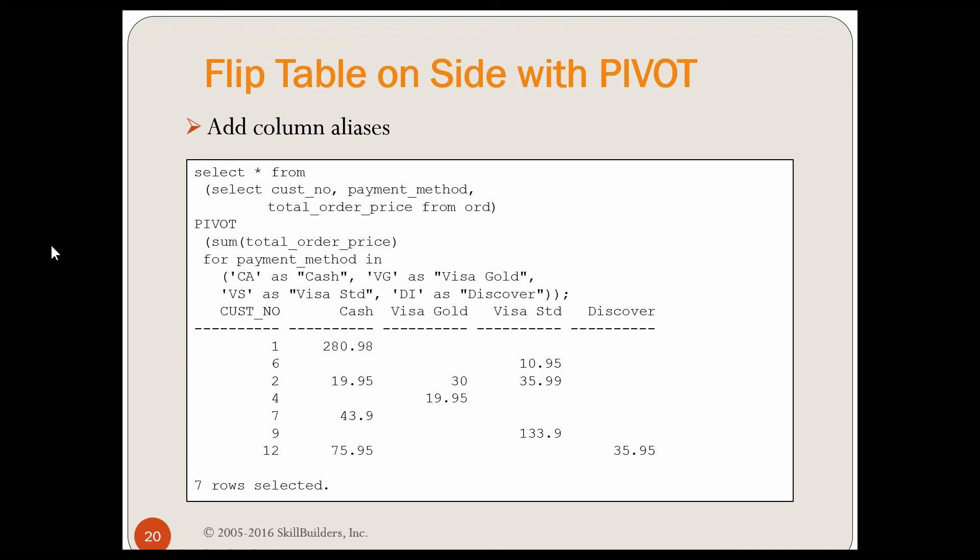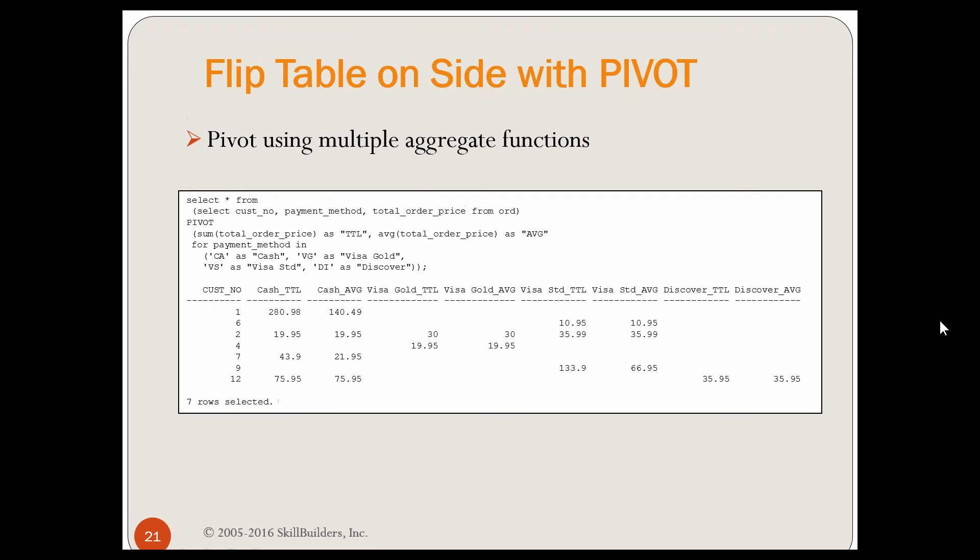I added my column aliases. But now, perhaps, notice I sum my total order price. Maybe I want more aggregate functions than that. I want multiple aggregate functions. How can you do that? No problem. In my pivot, I say sum of total order price, and I'm giving a column alias as total. We'll see why in a minute. And average of total order price as average. I didn't have to do just sum total order price and average total order price. I could have done other columns that I summed and aggregated and averaged and whatever. I'm doing the same thing here for payment method in with my same aliases. And now you'll see why I have a column alias total and average, because now I have cash underscore total, cash average, Visa gold total, visa gold average. So now you can get both the sum and the average, and which one you're in is indicated here by the combination of this column alias and this column alias.